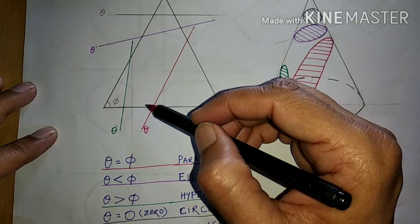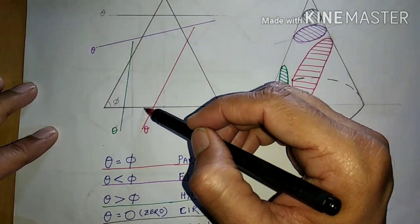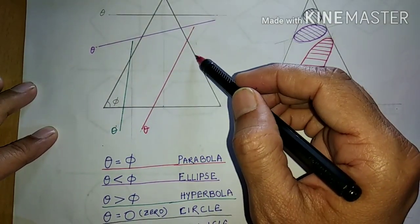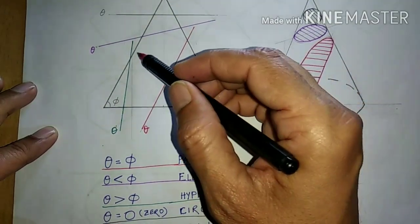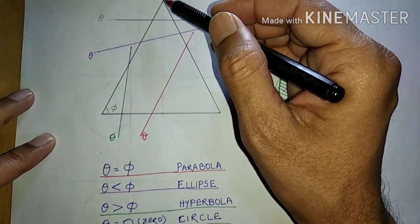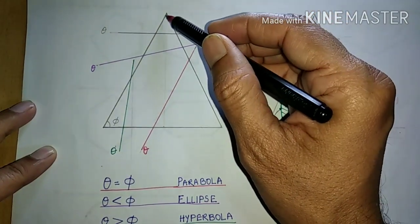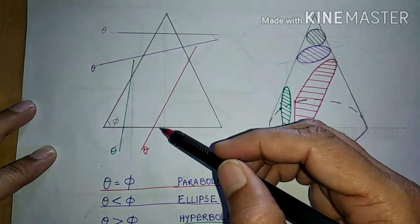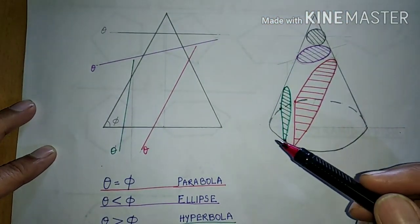If the cutting plane cuts the base but does not cut the extreme generator and instead passes through the apex, it will always give a triangle.